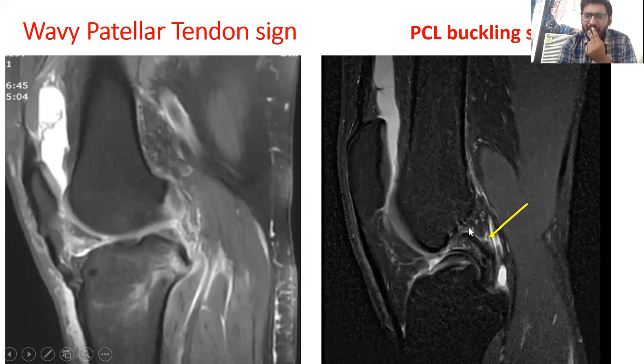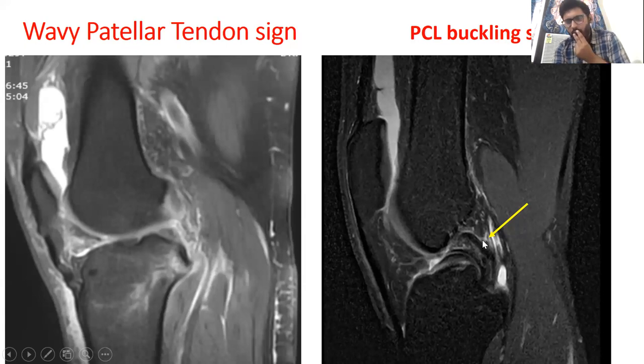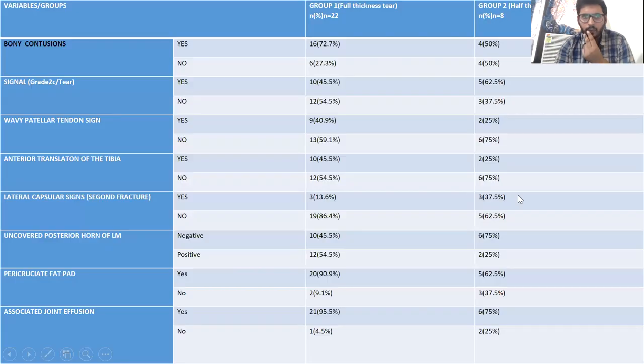Normally, the PCL is convex throughout its superior surface. If it becomes concave in its superior surface, then the PCL is said to have buckled, which constitutes the PCL buckling sign.